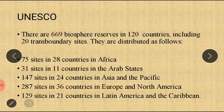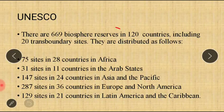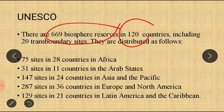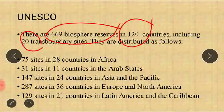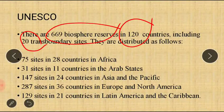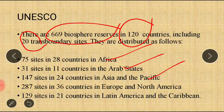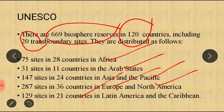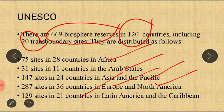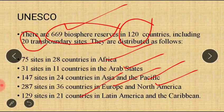There are 669 Biosphere Reserves at present across 120 countries of the world, including 20 trans-boundary sites that span over one or more countries. The distribution is: 75 sites in 28 countries in Africa; 31 sites in 11 countries in Arab states; 147 in 24 countries in Asia and Pacific; 287 sites in 36 countries in Europe and North America; and 129 sites in 21 countries in Latin America and Caribbean.